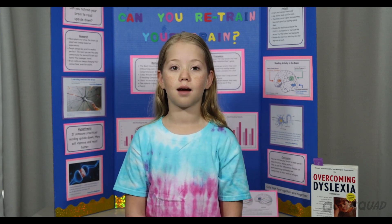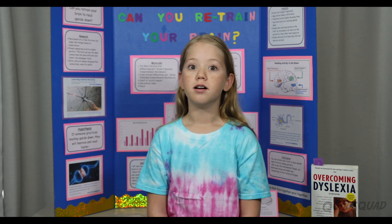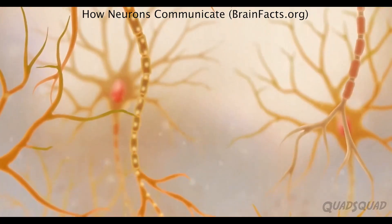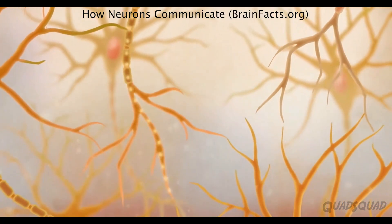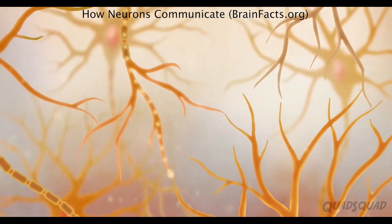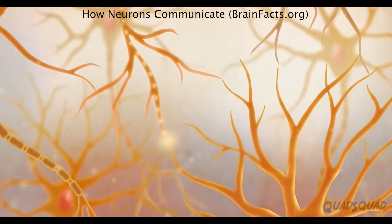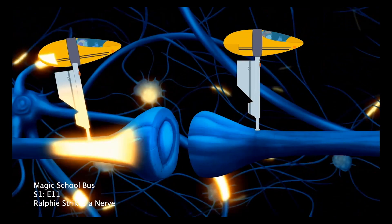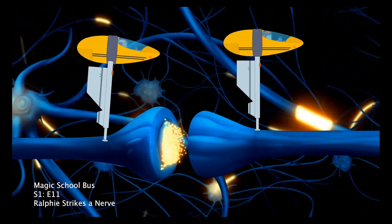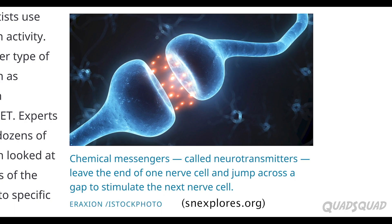Neuroplasticity is how the brain can adapt and change based on experience. Have you ever heard the saying, practice makes perfect? The way it works is, messages from your brain travel through many nerve cells. As they hop from one nerve cell to the next, neurotransmitters are there to help. Without them, the messages couldn't travel because they wouldn't be able to connect.